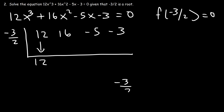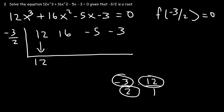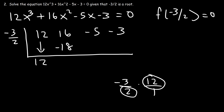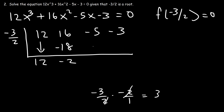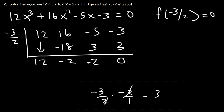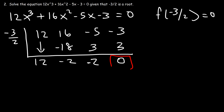Bring down the 12. Negative 3/2 times 12: either negative 3 times 12 = negative 36 divided by 2 = negative 18, or 12 divided by 2 = 6 times negative 3 = negative 18. Then 16 plus negative 18 is negative 2. Negative 3/2 times negative 2: the 2's cancel giving positive 3. Negative 5 plus 3 is negative 2. Negative 3/2 times negative 2 is 3, giving a remainder of 0, confirming the root.